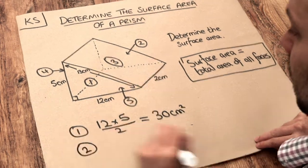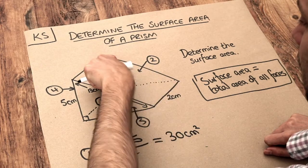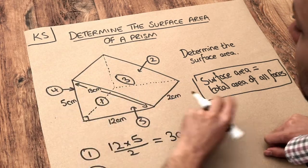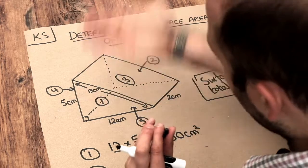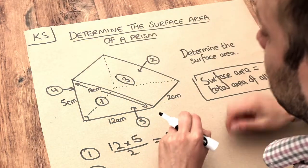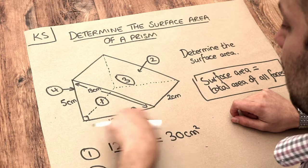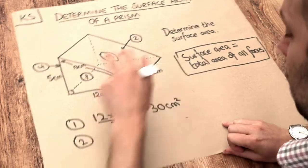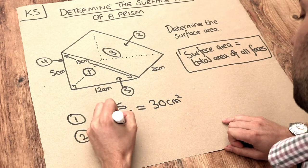Now what about face two? Can you see that face two, this triangle at the back, is going to be exactly the same area as the triangle at the front because this is a prism, which means wherever you chop it you're going to see the same shape, the same cross section. Therefore face number two is going to be 30 centimeters squared as well.